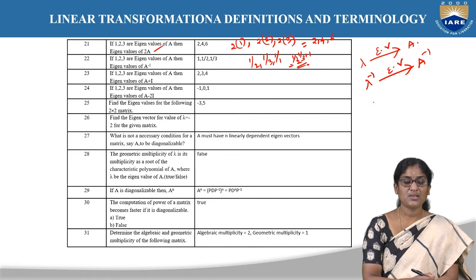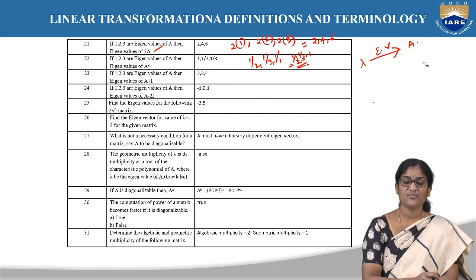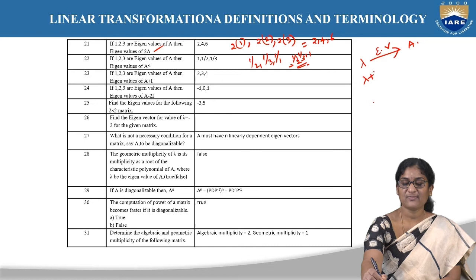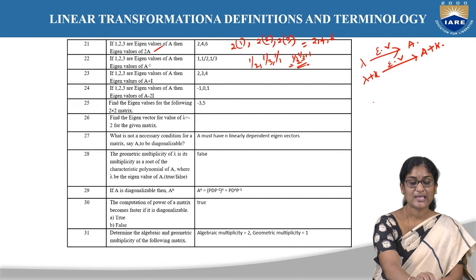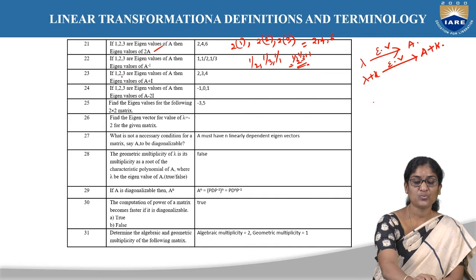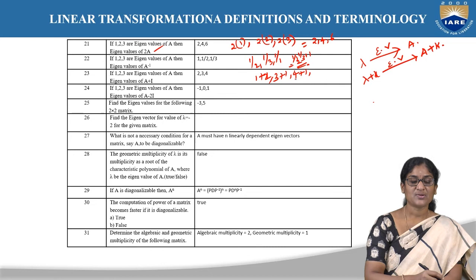If 1, 2, 3 are the eigenvalues of A, what are the eigenvalues of A + I? Based on the property that if λ is an eigenvalue of A, then λ + K is an eigenvalue of A + KI — adding 1 to each eigenvalue gives 1+1, 2+1, 3+1, that is 2, 3, 4.